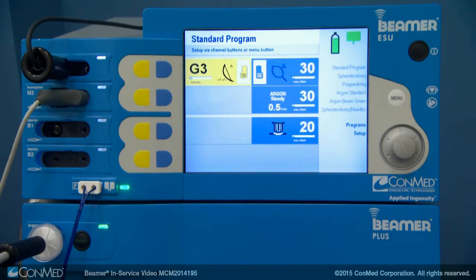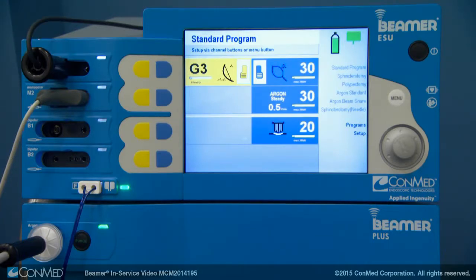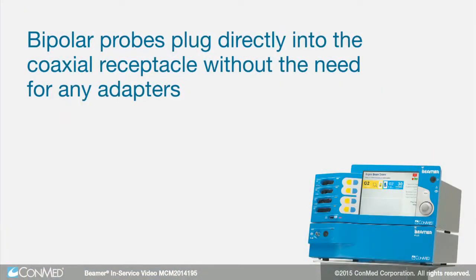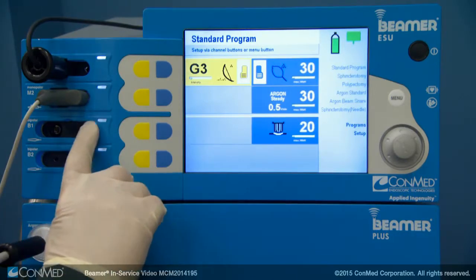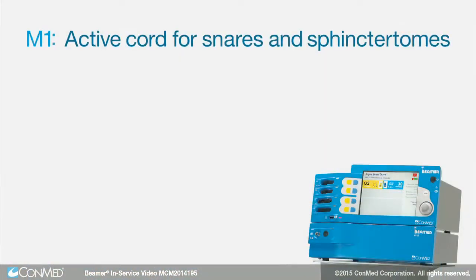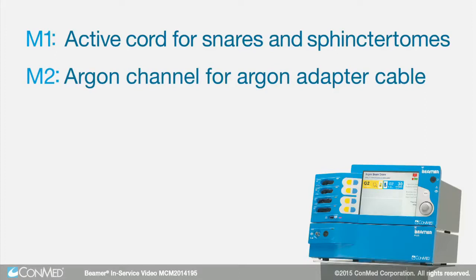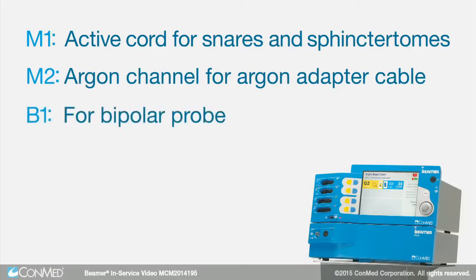The third line down is labeled bipolar B1 and is used for bipolar probes such as a BICAP or gold probe. These devices plug directly into the coaxial receptacle on the left without the need for any adapters. You will almost always have your active cord for snares and sphincterotomes plugged into M1. The second monopolar input will be designated as the argon channel. The third input, bipolar B1, will always be used when using a bipolar probe.